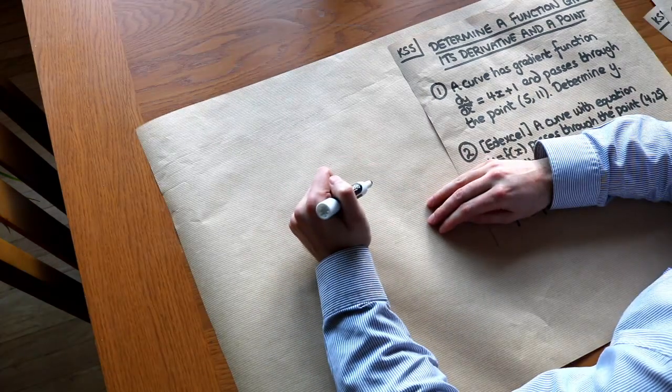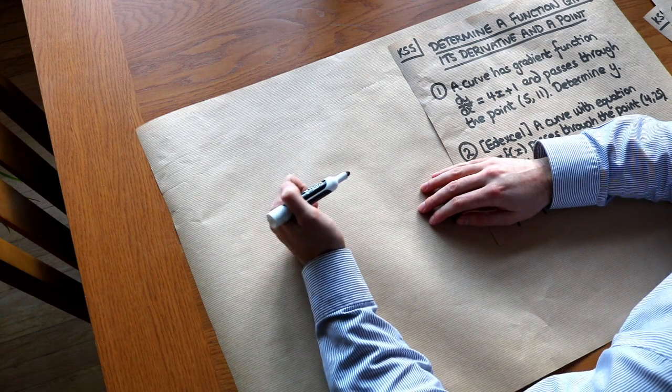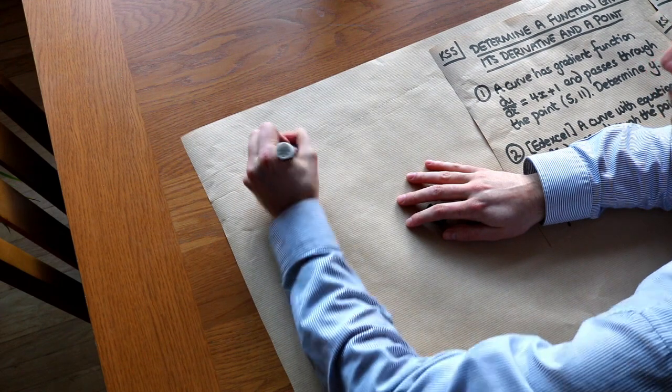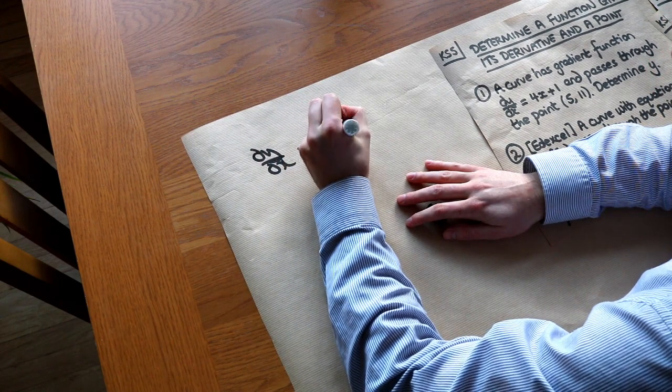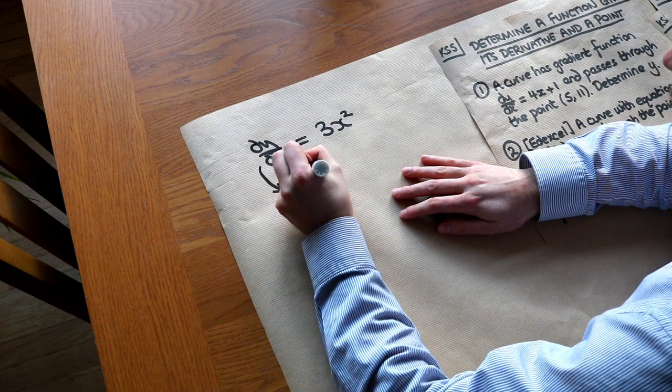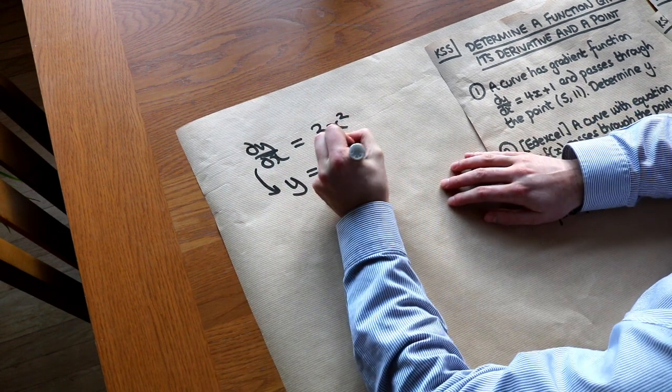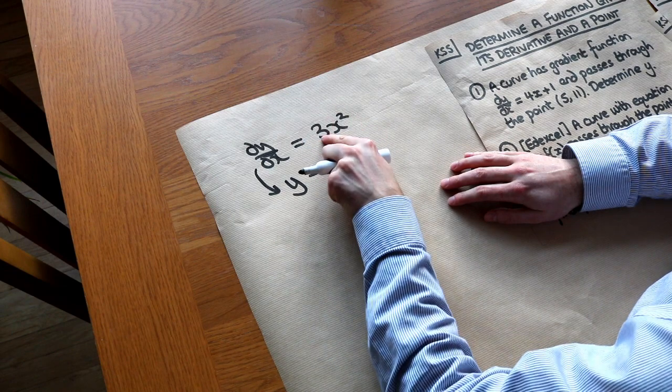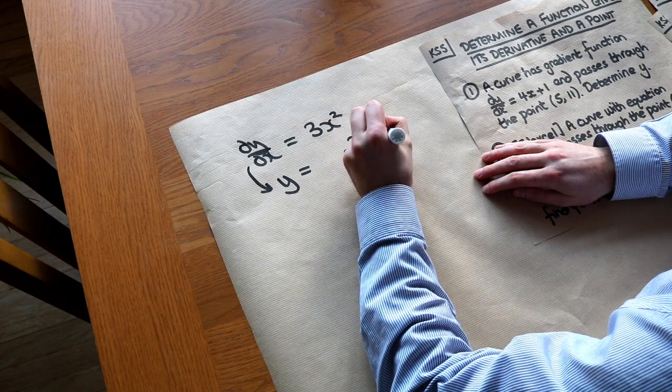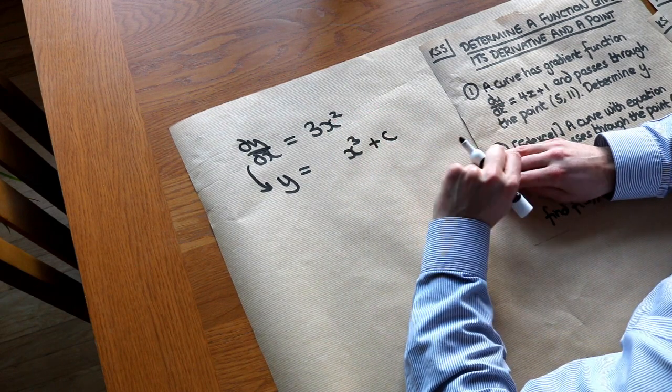In the previous video we saw how we could find the original function given the gradient. So if we had, for example, dy/dx was equal to 3x², then when we integrated it to find the original function y, we added 1 to the power and then divided by that power, so that just becomes x³. But we had this plus c, the constant of integration as it's known.